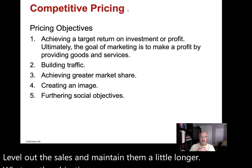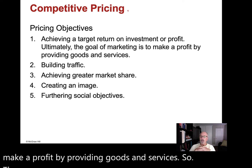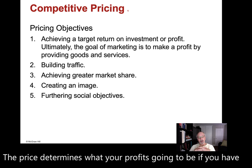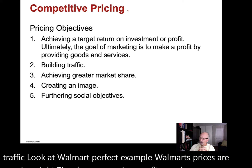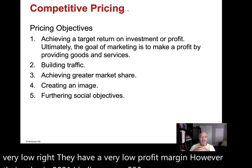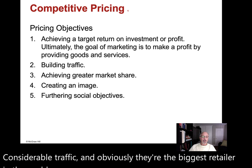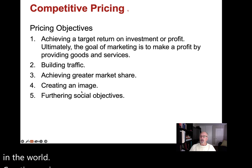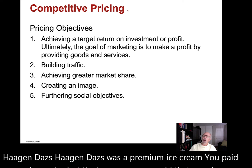What are the objectives of pricing? Achieving a target return on investment or profit — the price determines what your profit will be. Building traffic: lower pricing builds traffic, like Walmart, whose prices are very low with a very low profit margin, yet their sales in 2021 were $530 billion, making them the biggest retailer in the world. Creating an image: I used to work for Haagen-Dazs, a premium ice cream — you paid a premium price because the image was that you're getting a better quality product. Also, furthering social objectives.